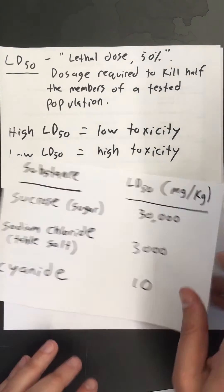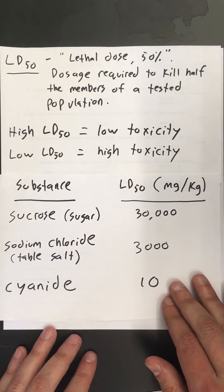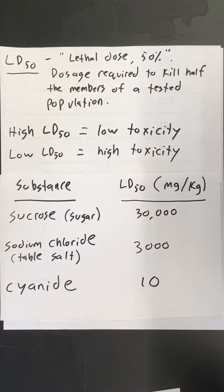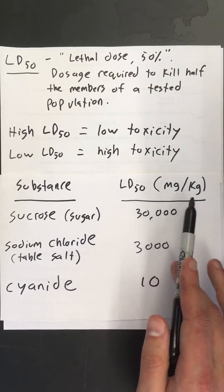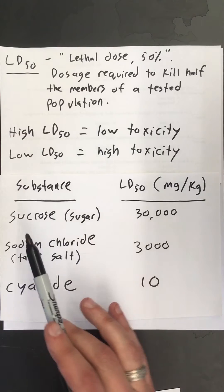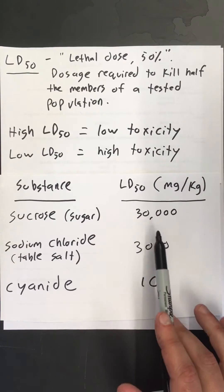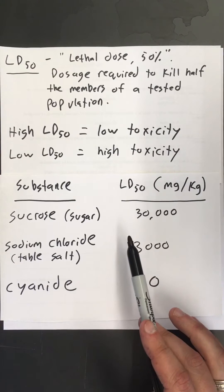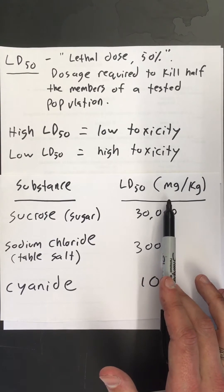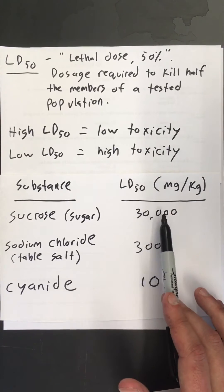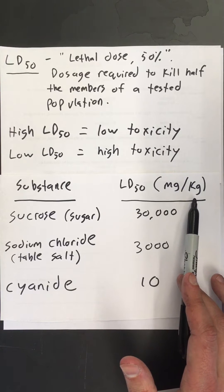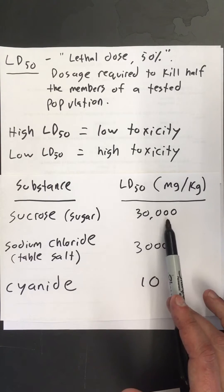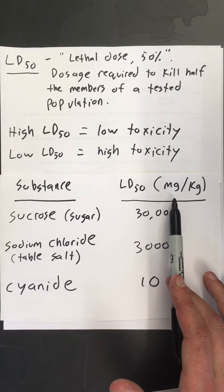To give you some ideas with common substances, I just jotted down the LD50 of sucrose, common sugar, which has an LD50 of 30,000 milligrams per kilogram. LD50s are usually listed in milligrams per kilogram, and that means for every kilogram of body mass you would need 30,000 milligrams to kill 50% of the test population.